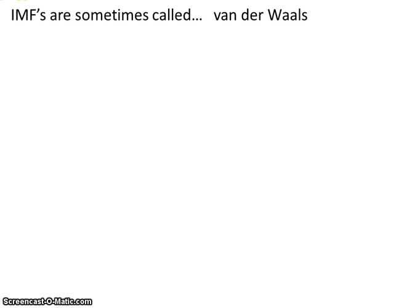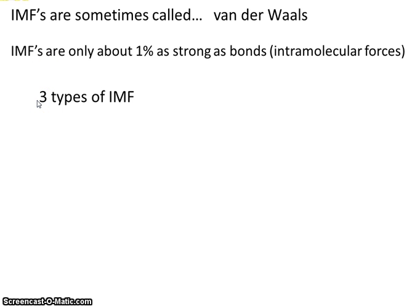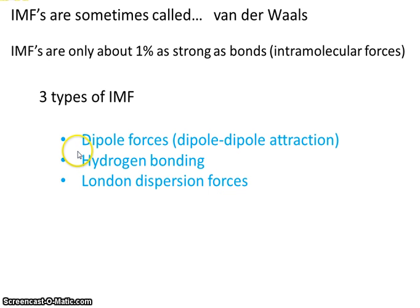Here's just a brief intro. Inter-molecular forces, sometimes called IMFs, are also called van der Waals forces, so you may see that term as well. IMFs are only about 1% as strong as bonds — and you know that bonds are the intra-molecular forces — so a covalent bond or an ionic bond would be significantly stronger than an IMF. There are three types of IMFs we're going to look at in the next videos: dipole forces, hydrogen bonding, and London dispersion forces.